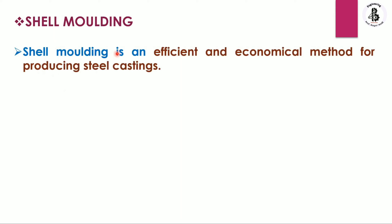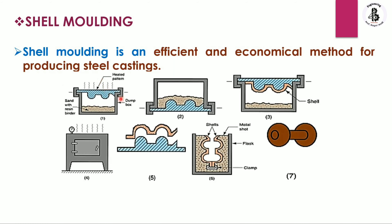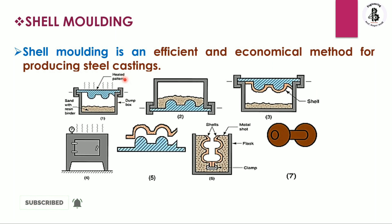Shell molding is an efficient and most economical method of producing steel castings, involving various steps to make shell molding components. Heated patterns are used in making shell molds. In any casting process a pattern is made according to the required shape and size, and in shell molding these patterns are made with metallic materials.